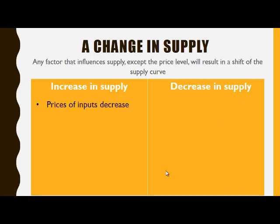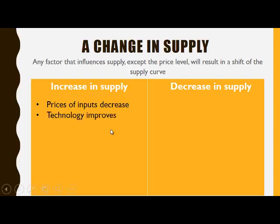Let's look at the factors that cause an increase in supply. When the price of inputs decreases, it means that the same amount of goods can now be produced at a lower price, and therefore there will be an increase in supply.